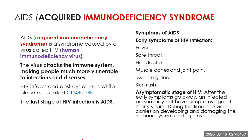Another very dangerous disease caused by a virus is Acquired Immunodeficiency Syndrome, or AIDS. It is mainly caused by the virus HIV, or Human Immunodeficiency Virus. The main function of that virus is that it attacks the immune system, making people more vulnerable to infectious diseases. It destroys certain white blood cells called CD4-plus cells. The last phase of HIV infection is AIDS. Symptoms of AIDS include fever, sore throat, headache, muscle and joint pain, swollen glands, and skin rash.